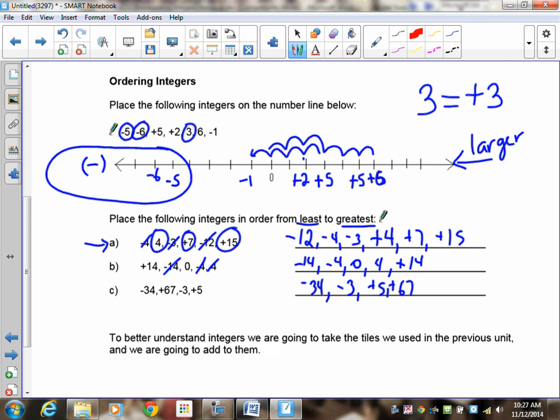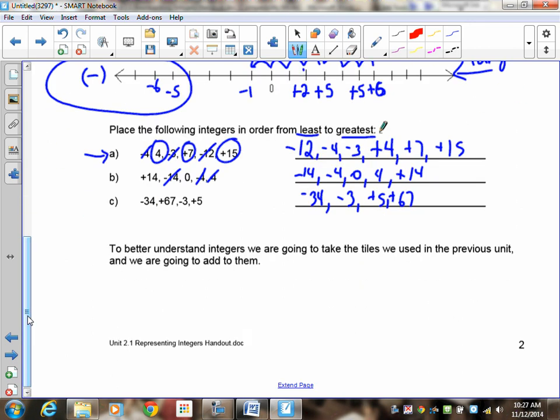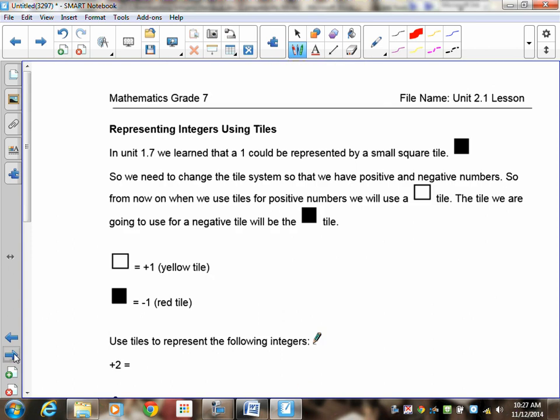Okay. To better understand integers, we're going to take the tiles that we used at lesson 1.8, and we're going to add to them now. So this is our next step. Now that you know how to put them in order and we've done a review of grade six, our next step now is to move on to grade seven. And grade seven has you adding them. So, we're going to be doing representing integers now. Now you notice that I now have a clear tile right here, and I have a dark tile. Now we use the filled in ones to represent the negative. Think of them as being negative, bad, dark side. These ones are clear, good, positive, side.